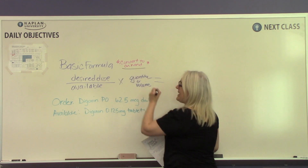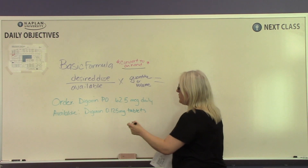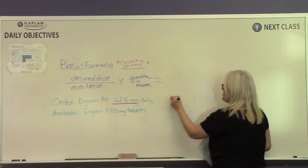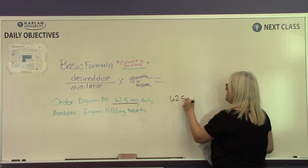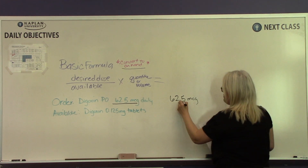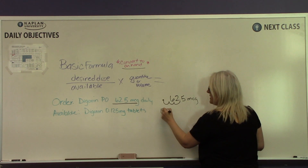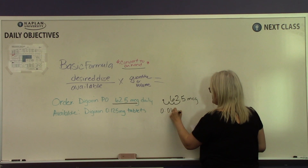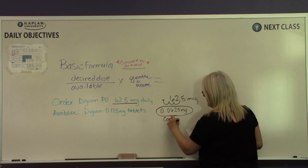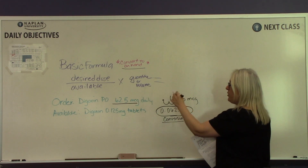Converting to what is on hand is important when calculating tablets and milliliters to administer. We need to take 62.5 micrograms and turn it into milligrams. All we have to do is move the decimal point three places, so 62.5 micrograms becomes 0.0625 milligrams. This is our conversion to what we have on hand, and now we can plug this number into our formula.